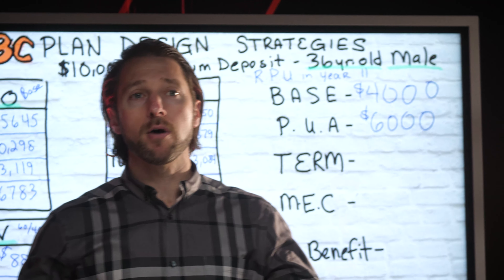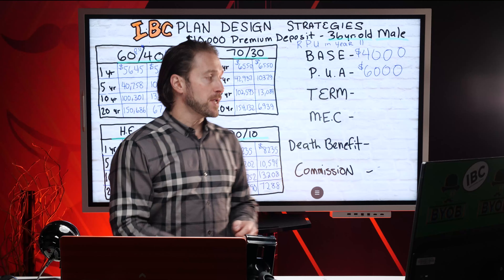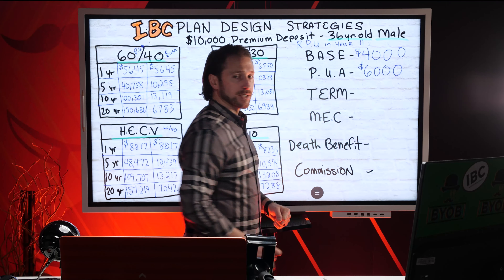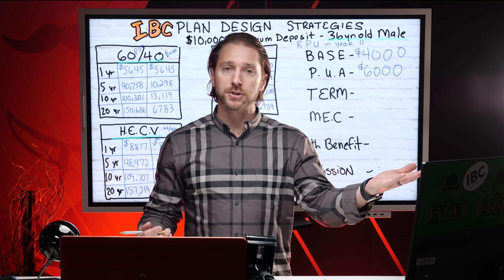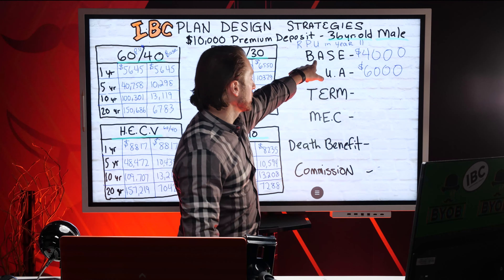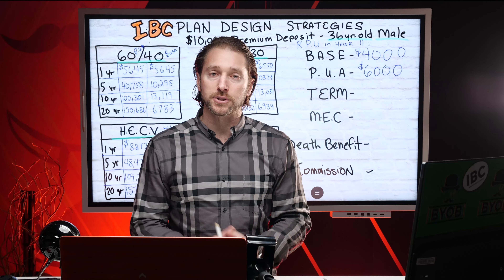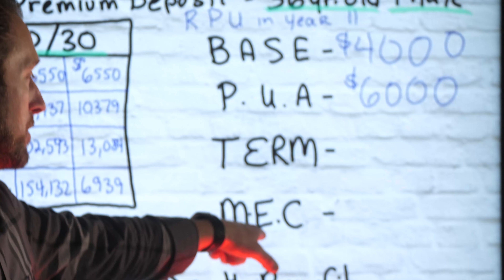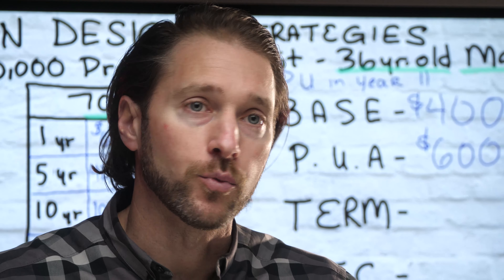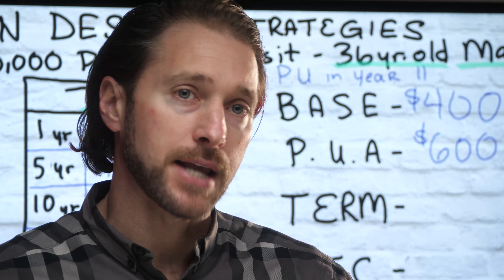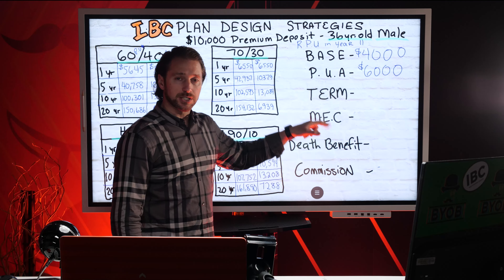The MEC 7-pay rule means: how much death benefit do we need to support the premium deposits going in? We can't just put all the money into the paid-up additions. First, you wouldn't really have a death benefit and the policy wouldn't represent life insurance. Second, you would violate the MEC rules and this would become taxable like every other investment. We want this to remain tax-free forever, so we have to play within the IRS guidelines — the MEC 7-pay rule.